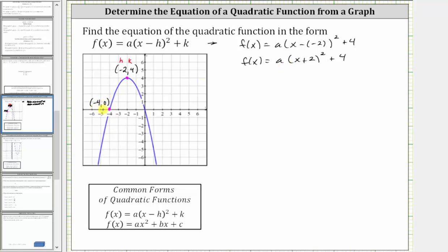And perform substitution to find the value of a. If the point (-4, 0) is on the graph of the function, then we know f(-4) must equal zero. So we can substitute negative four for x and zero for the function value, and then solve for a. Performing the substitution gives us 0 = a(-4 + 2)² + 4.